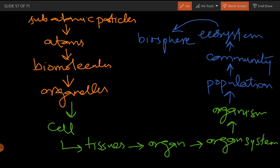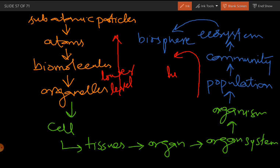The biosphere is all the part of the earth where life exists. Looking at this diagram, the green part shows the levels of organization discussed in this chapter. The higher levels of organization can be seen in the next chapter.